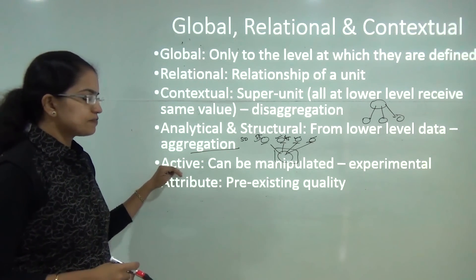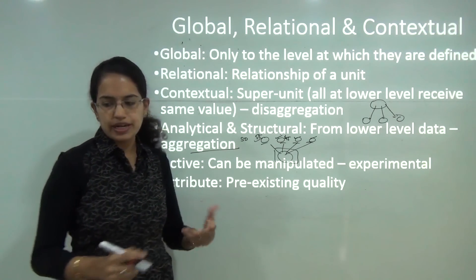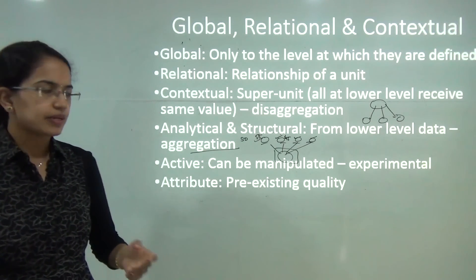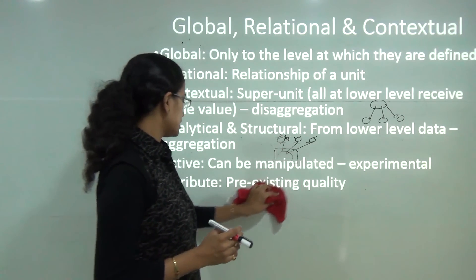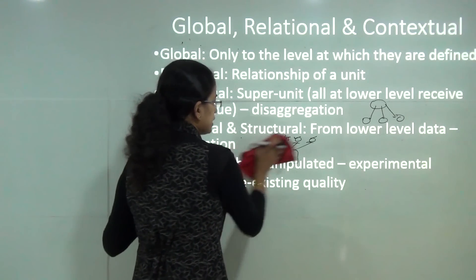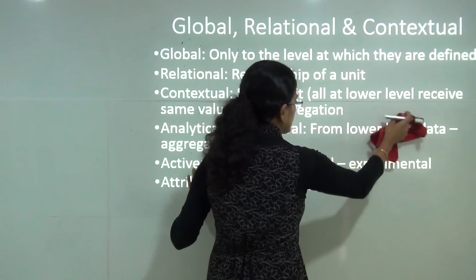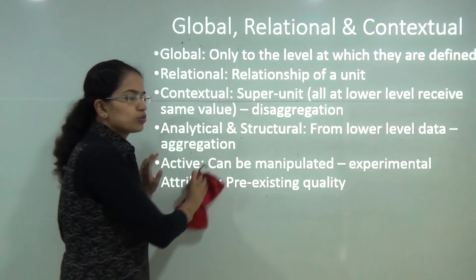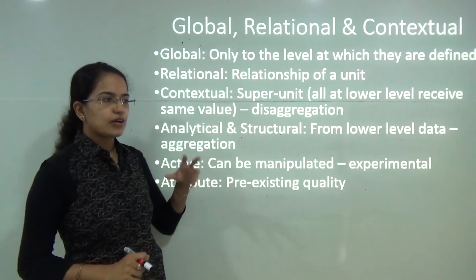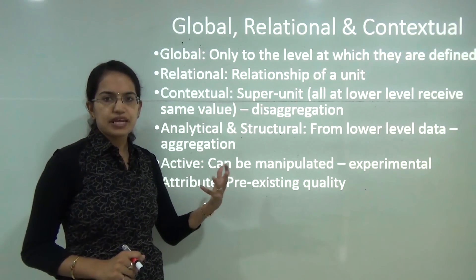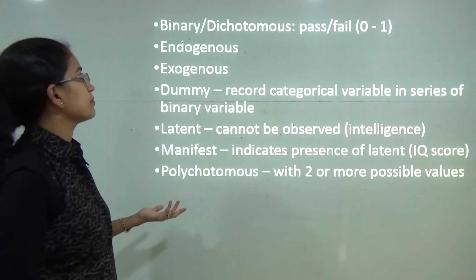The next is the active variable, which can be manipulated by the experimenter and is usually used in experimental studies. Finally, you have the attribute variable, which shows a quality — good or bad, or any pre-existing quality that explains the variable.